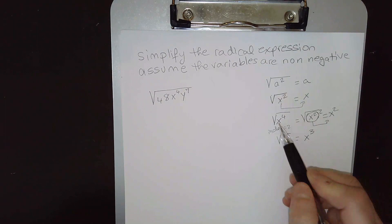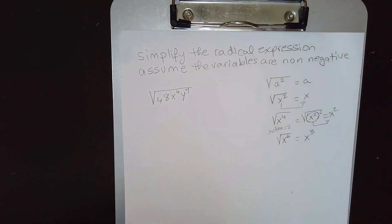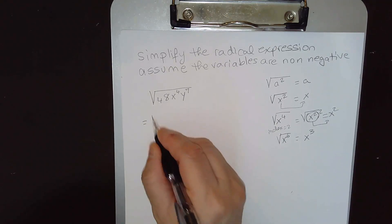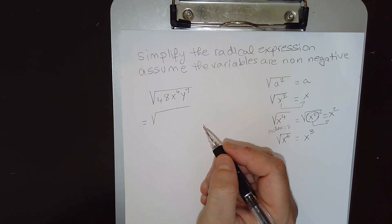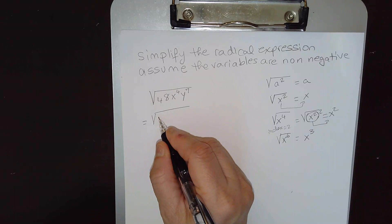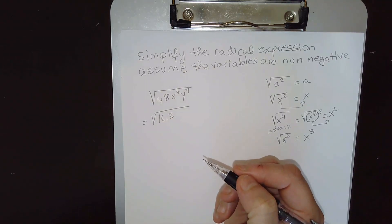Now for the radical, for the expression to come out in the square root, the power has to be even. So let's take a look here. Let's take a look at the numbers first. 48 is not a perfect square, but if you notice that 48 is 16 times 3 and 16 is a perfect square, that's the square of 4.